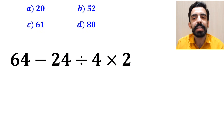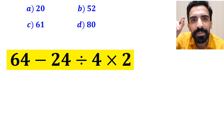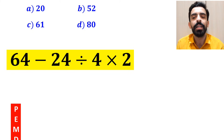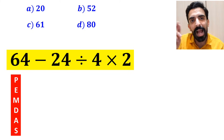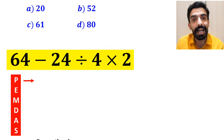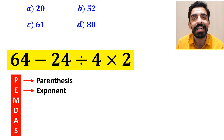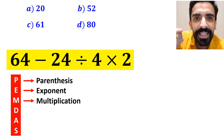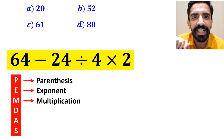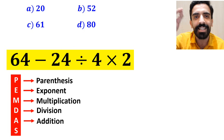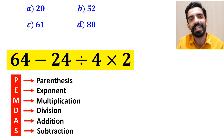Now let's go step by step and show you how to solve this expression correctly. To solve this question, we must follow a rule called PEMDAS. In this rule, P stands for parentheses, E stands for exponent, M stands for multiplication, D stands for division, A stands for addition, and S stands for subtraction.